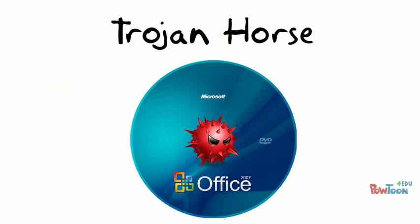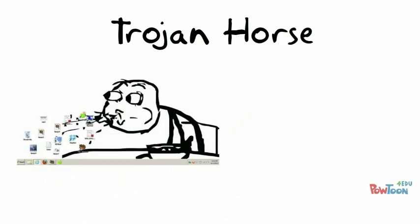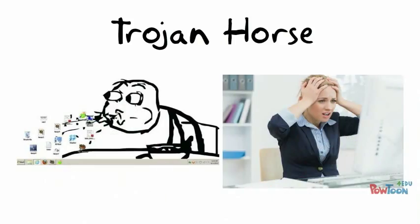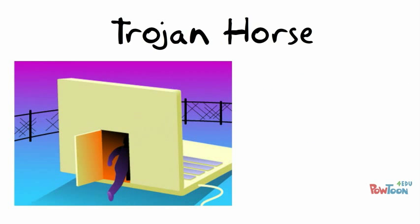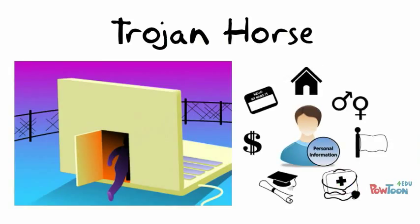Some Trojans are designed to be more annoying than malicious, like changing your desktop, or they can cause serious damage by deleting files and destroying information on your system. Trojans are also known to create a back door on your computer that gives malicious users access to your system, possibly allowing confidential or personal information to be compromised. Unlike viruses and worms, Trojans do not reproduce by infecting other files, nor do they self-replicate.